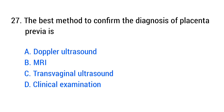Question number 27. The best method to confirm the diagnosis of placenta previa is? The right answer is option C, transvaginal ultrasound.